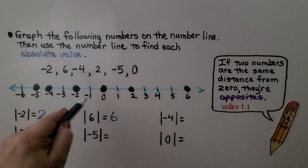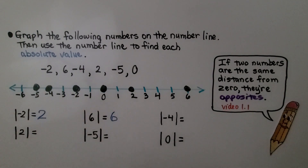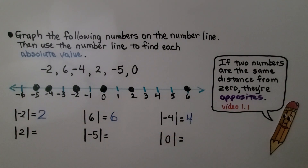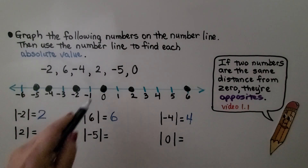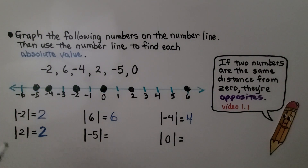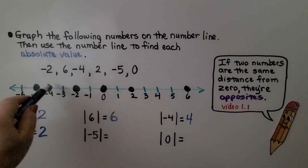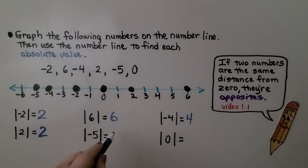For negative four, it's one, two, three, four jumps away from zero — the absolute value of negative four is equal to four. For positive two, that's one, two jumps away from zero — the absolute value of two is two. For negative five, it's one, two, three, four, five jumps — the absolute value is five.